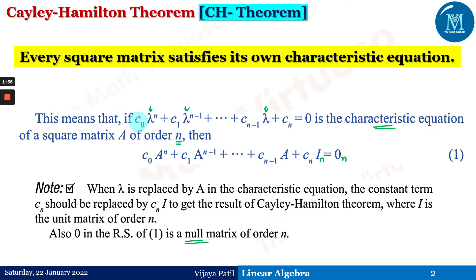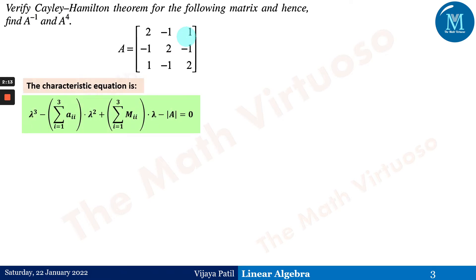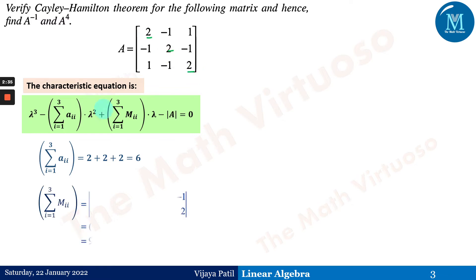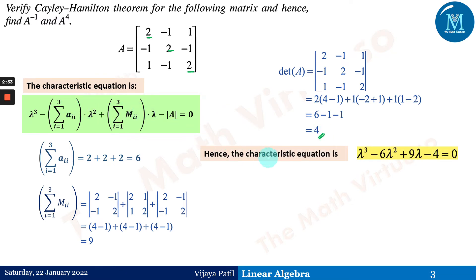The first question asks us to verify the Cayley-Hamilton theorem for the given 3×3 matrix and hence find A inverse and A to the power 4. We find the characteristic equation: λ³ - (Σaᵢᵢ)λ² + (Σmᵢᵢ)λ - det(A) = 0. We get Σaᵢᵢ = 2+2+2 = 6, Σmᵢᵢ = 9, and det(A) = 4. Substituting, the characteristic equation is λ³ - 6λ² + 9λ - 4 = 0.